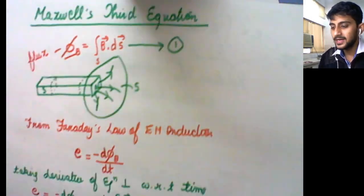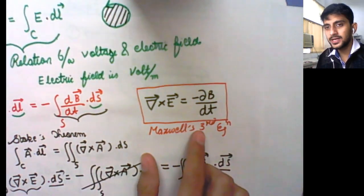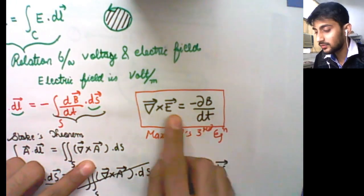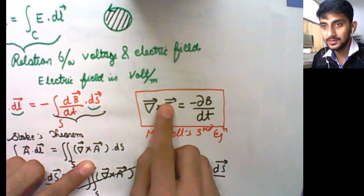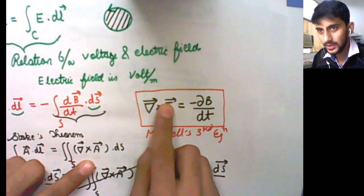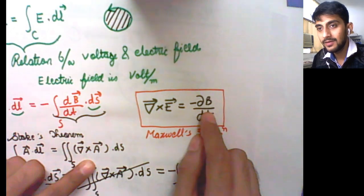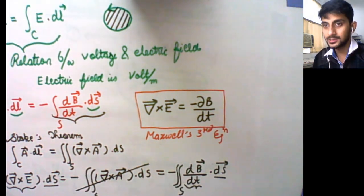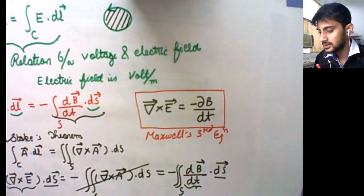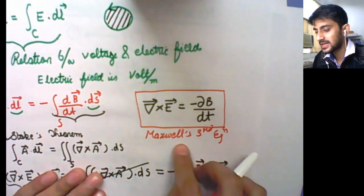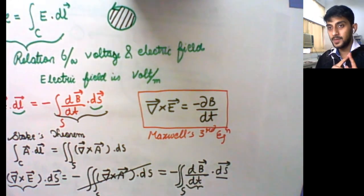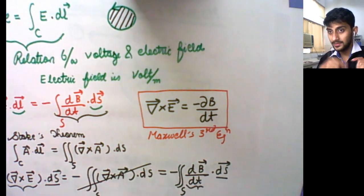If you have a time-varying magnetic field, then an EMF will be induced across a space. This is the physical interpretation of Maxwell's third equation. We are left with Maxwell's fourth equation, which we will do in the next video.